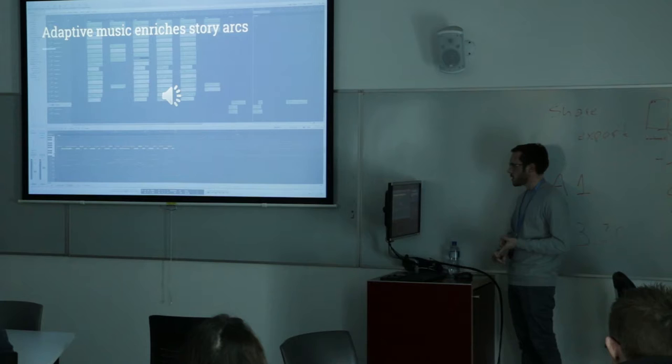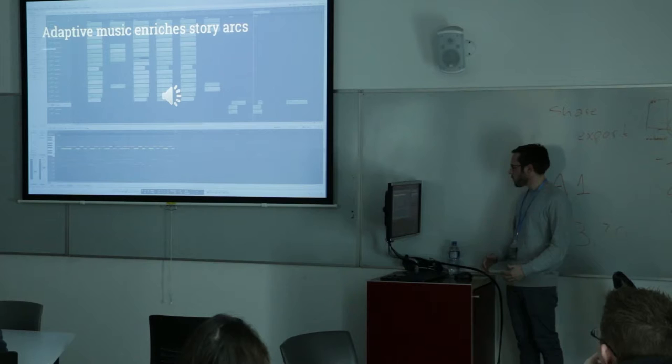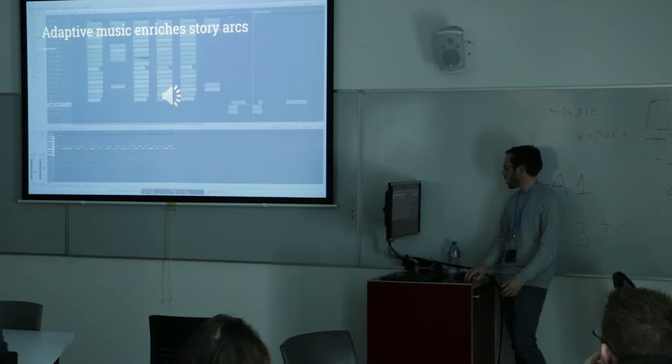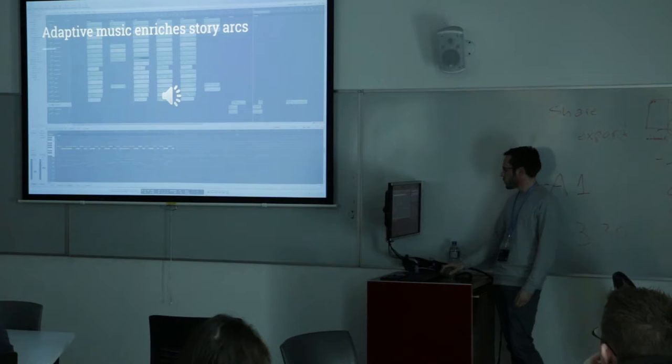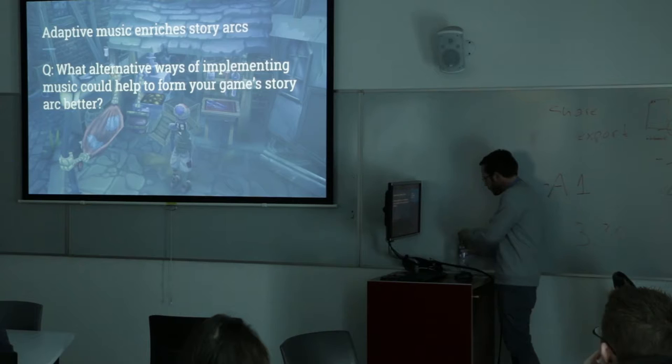Red Dead Redemption uses a couple of serious constraints where all of the music is in the same tempo and the same key to allow the use of vertical layering everywhere in its open world. Basically, any musical layer is compatible with any other musical layer in theory, so the music can follow whatever the player chooses to do. If they're having a peaceful moment and then suddenly pull out a gun, the music can respond instantly and seamlessly. So: what alternative ways of implementing music can help you to form your game's story better?